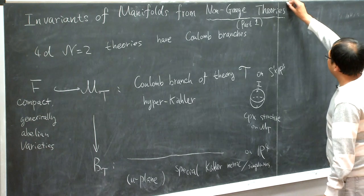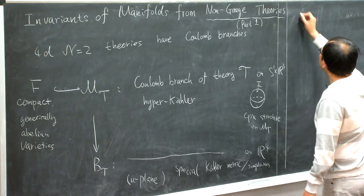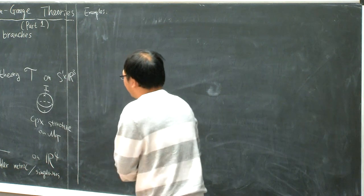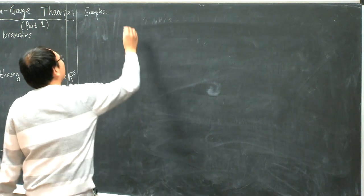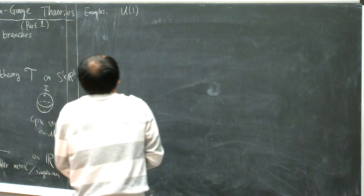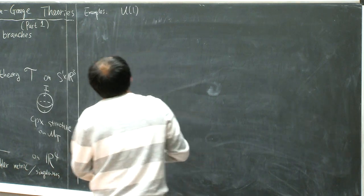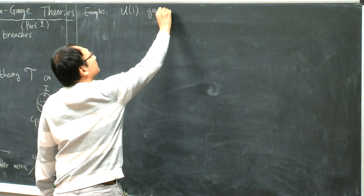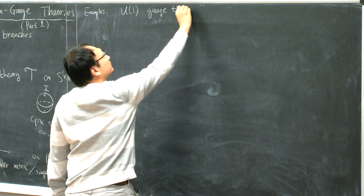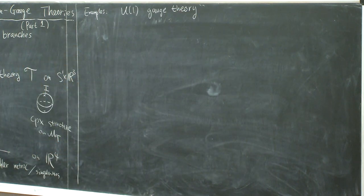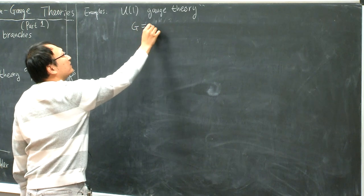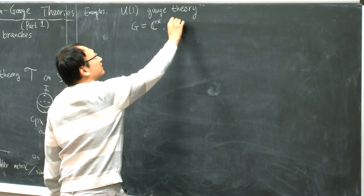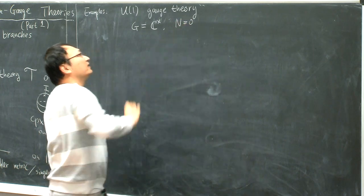So the base B is equipped with a special Kähler metric, and this metric can also have singularities. The singularity of the special Kähler metric indicates that the fiber over some particular points also becomes singular. Let me give you some examples. Let's start with the theory that we are very familiar with.